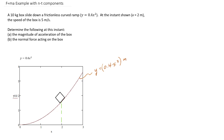The constant 0.4 has units that result in meters when we plug in, and x is also in meters. At the instant shown when x equals 2 meters, the speed of the box is 5 meters per second. So it's going down the ramp with a velocity tangent to the path at 5 meters per second. What I want to do is determine the magnitude of the acceleration of the box and the normal force acting on the box.